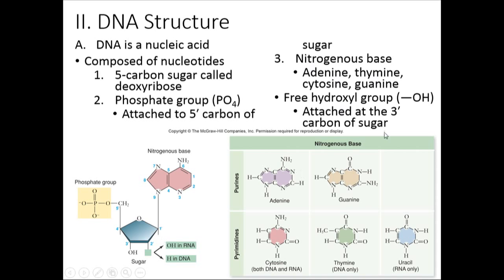There are four different types of bases it may have, and there's a free hydroxyl group on the three-prime carbon of the sugar. They number these carbons — each bend in the ring structure represents a carbon. That's the one-prime, two-prime, three-prime, four-prime carbons of the sugar, and then the last one is the five-prime. The phosphate group is attached to the five-prime, the hydroxyl group is on the three-prime, and the nitrogenous base is attached to the one-prime.